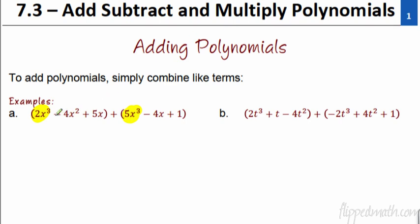What else can we combine? We have negative 4x squared, and as we get over to the other polynomial, there's no squared term — no term that has a squared on x — so we can't add that to any of these other terms, so we're just going to leave that one. Next, we have a regular x to the first power, just an x term. That's the 5x. We're going to combine that with the negative 4x, and then lastly we have just the constant, which is plus 1.